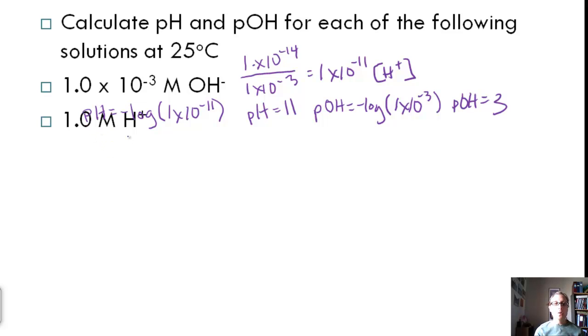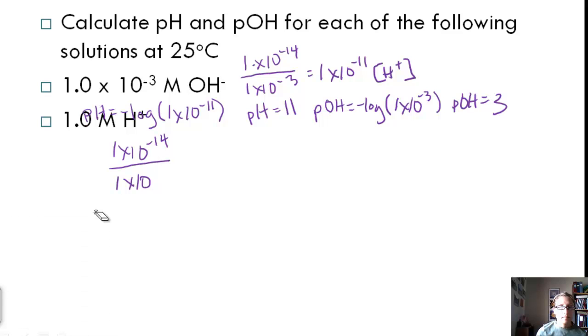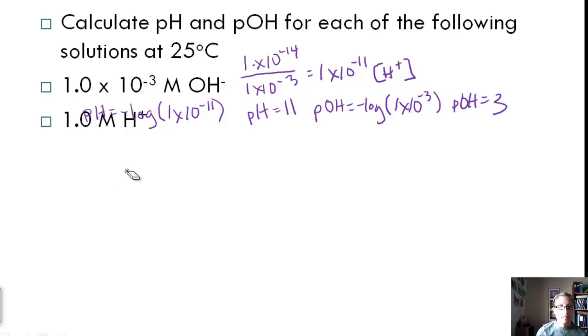Let's look at the next one, which is 1 molar of H plus. We're going to do the same process: 1 times 10 to the negative 14 for Kw divided by our 1 molar gives us 1 times 10 to the negative 14 for OH minus.